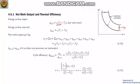The expression for net work output is the sum of all heat transfers during all processes: W_net equals Cp·(T3 minus T2) plus Cv·(T1 minus T4). The heat transfers for processes 1 to 2 and 3 to 4 are zero, so only these two terms remain.